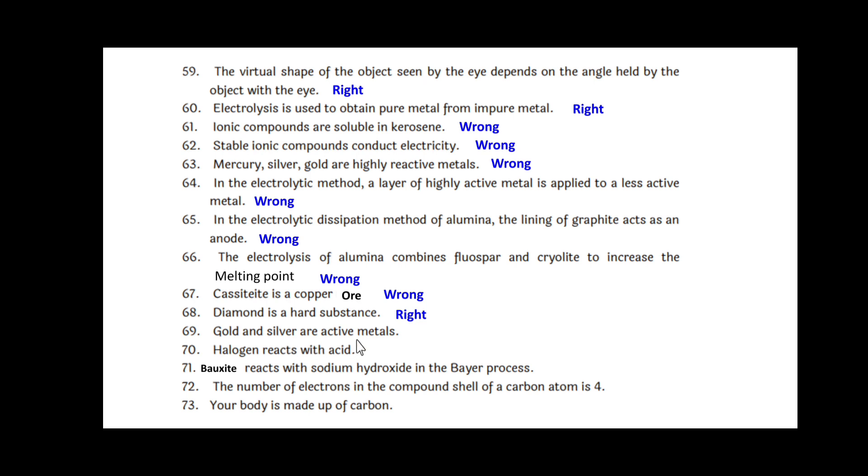Gold and silver are active metals. That is wrong. Halogen reacts with acid. Right. Bauxite reacts with sodium hydroxide in the Bayer's process. That is right. The number of electrons in the outermost shell of a carbon atom is 4. Right. Your body is made up of carbon. That is right.